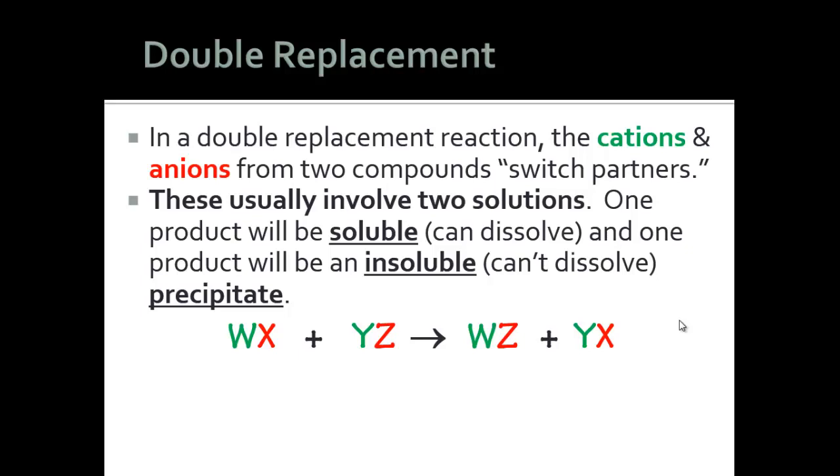The formula is WX plus YZ yields WZ plus YX. Notice the colors here, green and red, are very intentionally repartnered on the right. W switched with Y and now has Z as its partner, while Y has X. The green ones would be the cations and should go first.